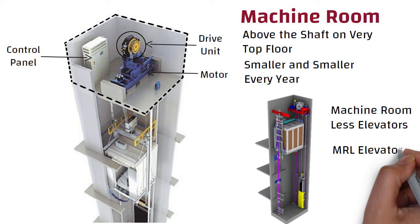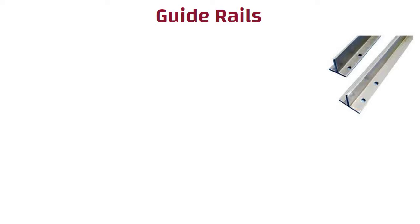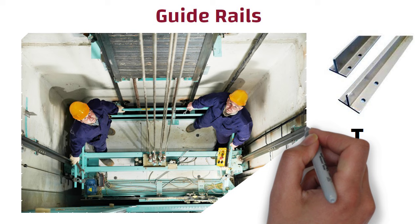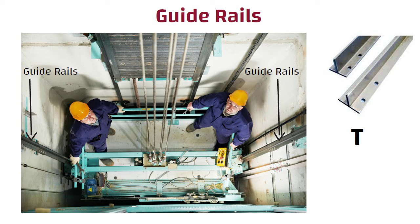Guide rails are generally made of steel and their shape is like the English letter T. They are installed vertically in a shaft to guide and direct the course of travel of an elevator car and elevator counterweights.